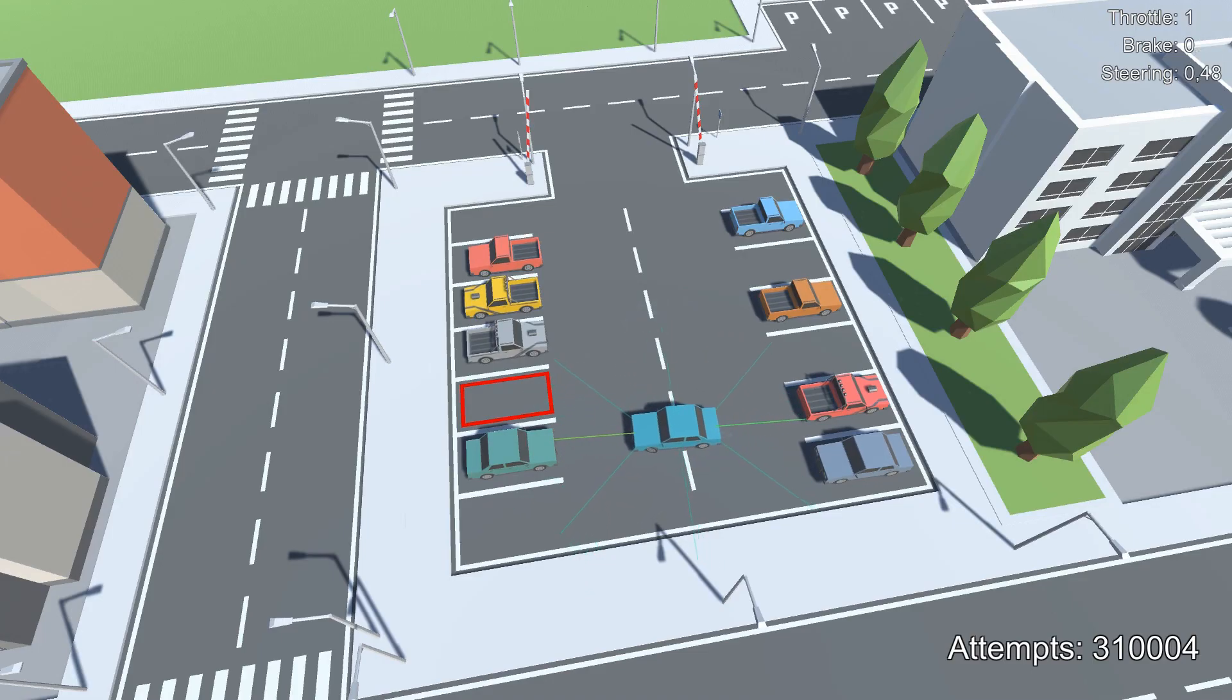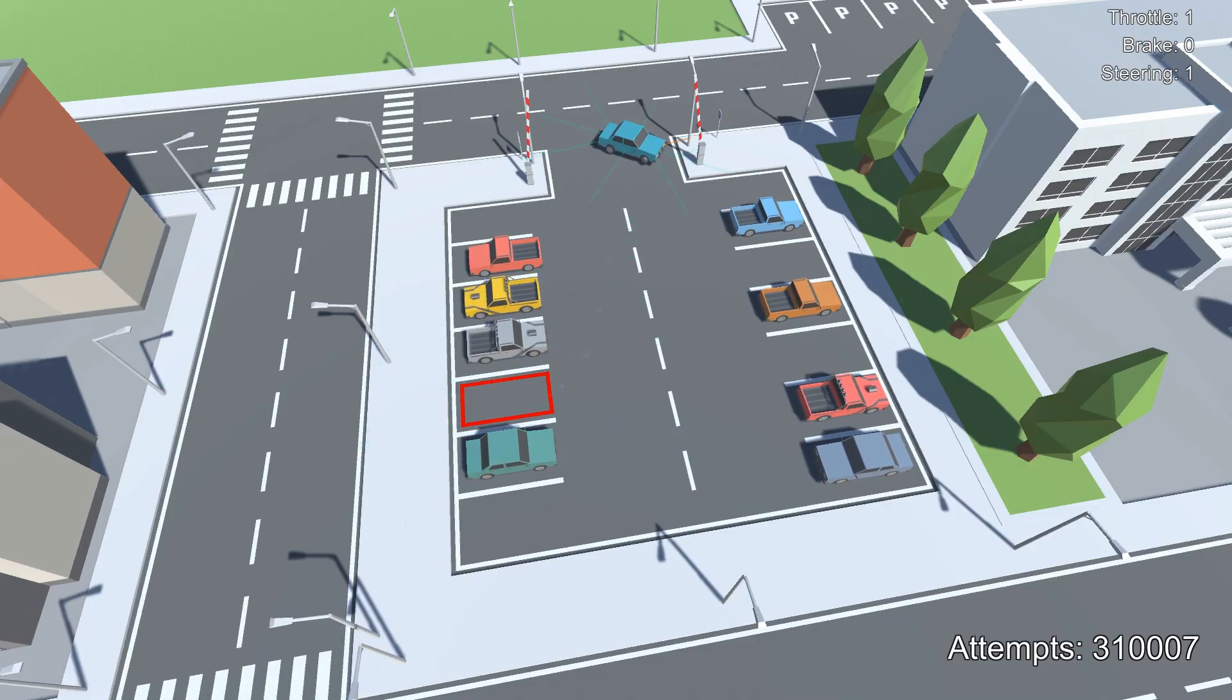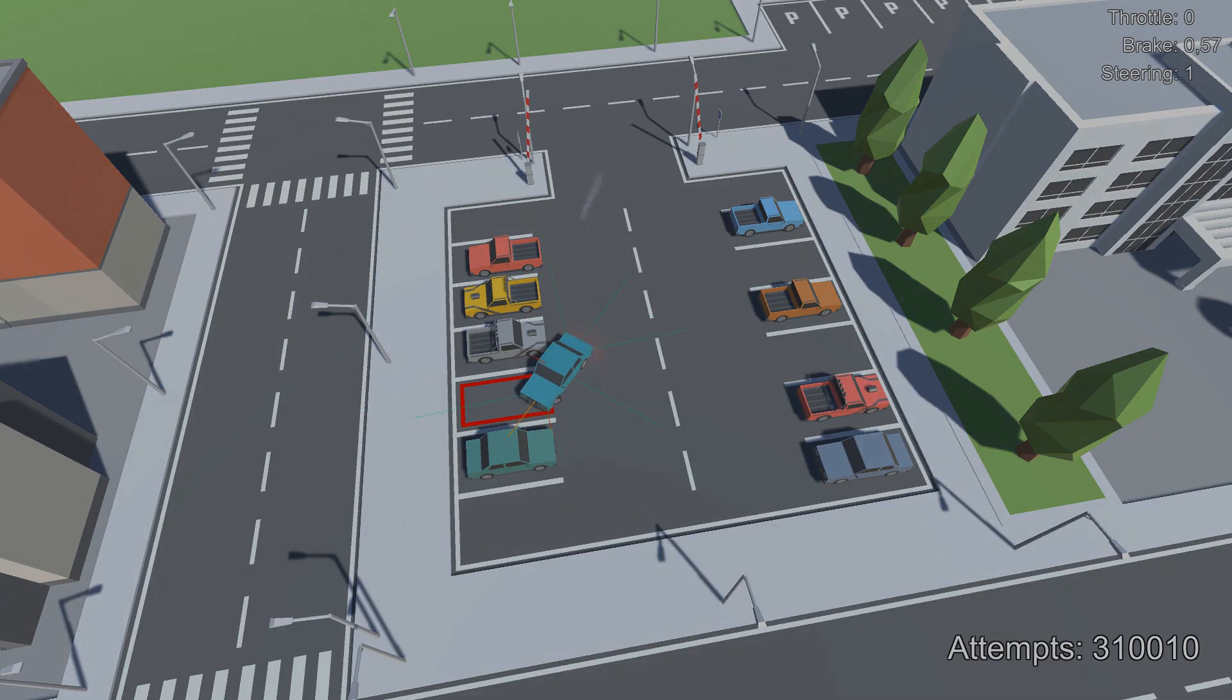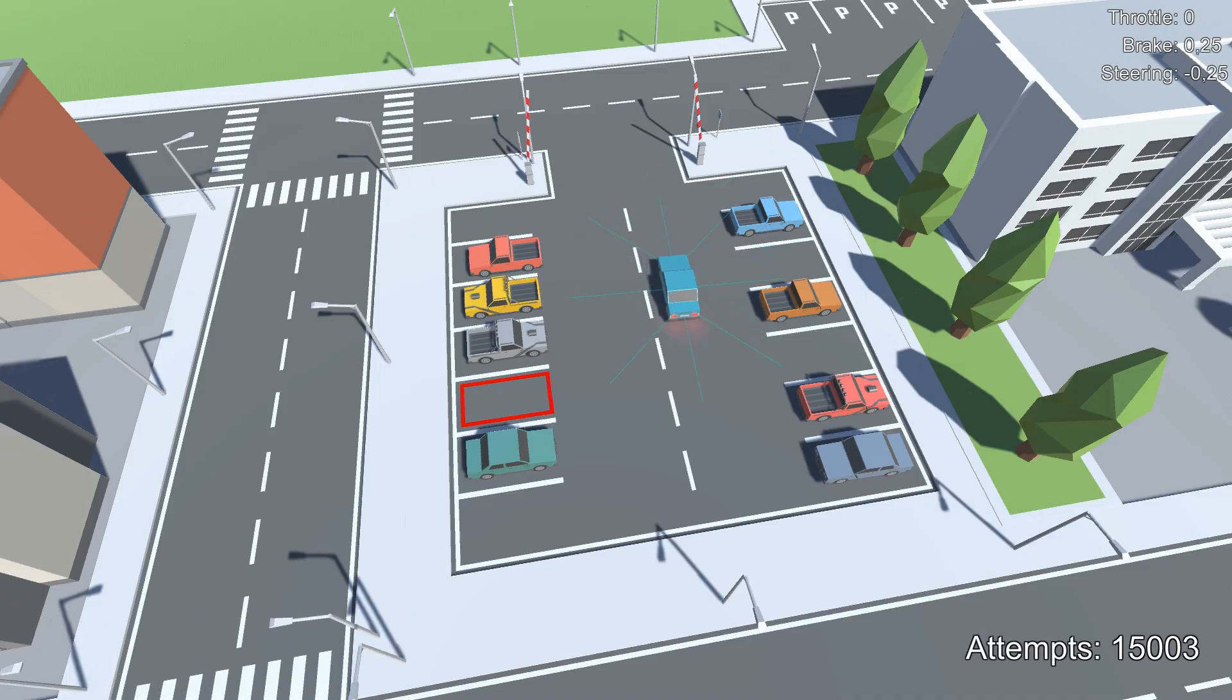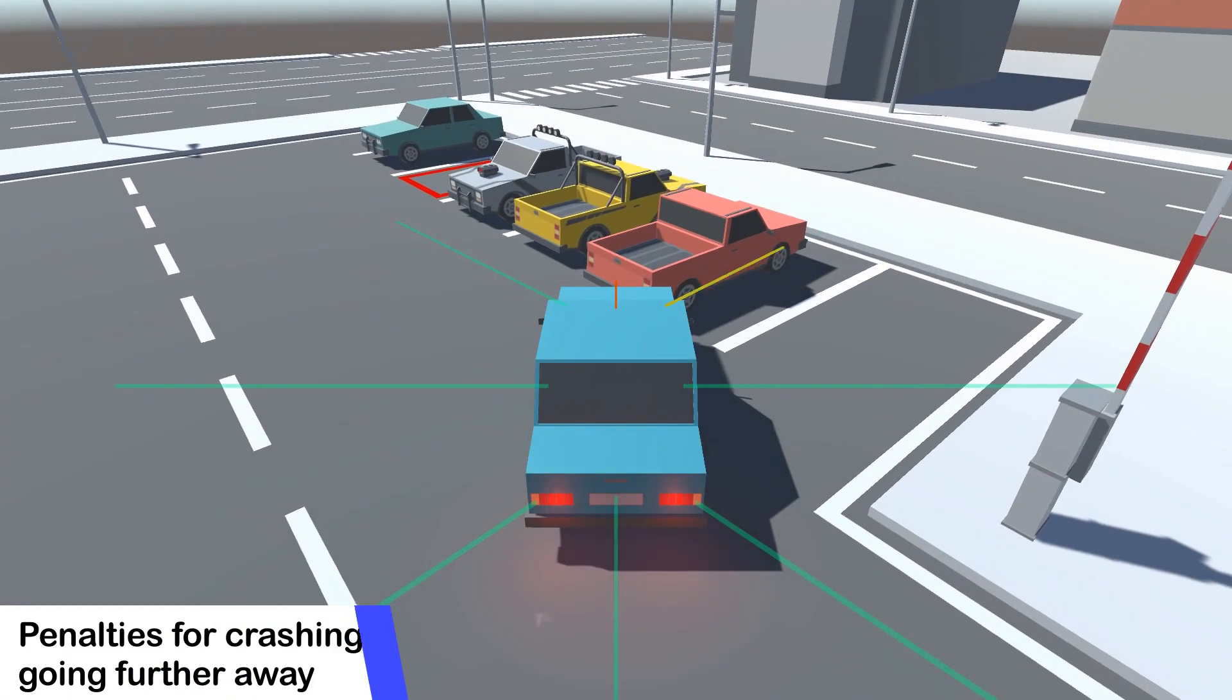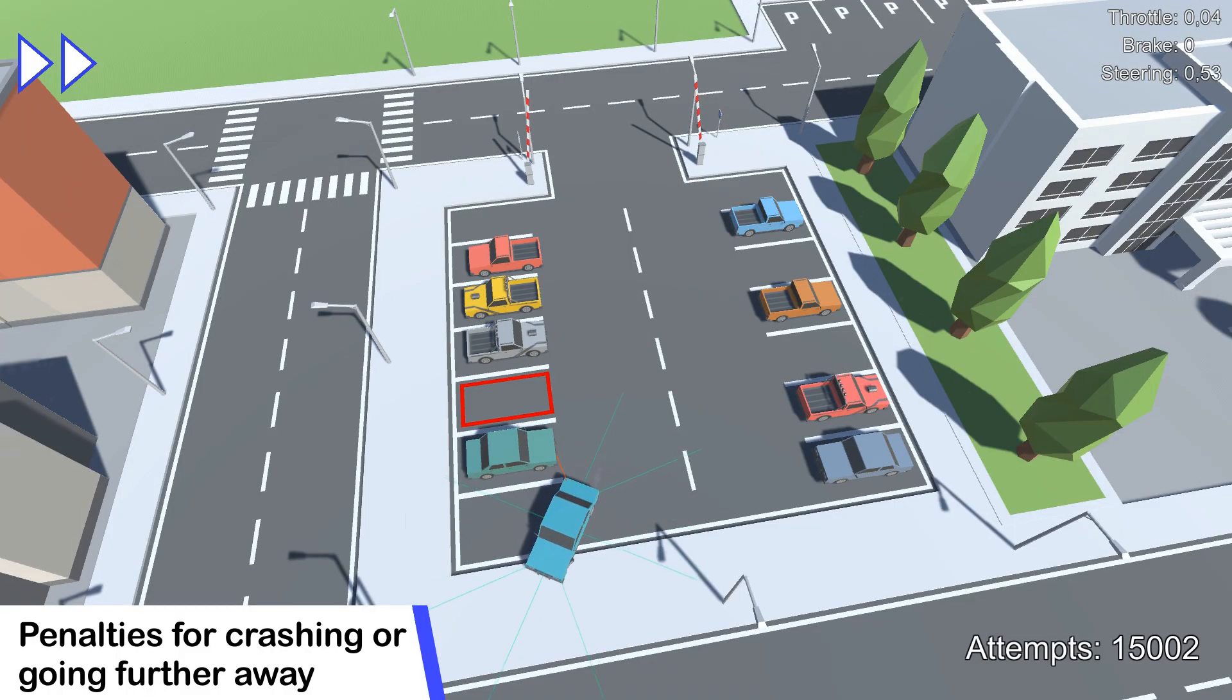We're gonna be using the same framework as last time, which is Unity's ML Agents, and the same learning algorithm, which is reinforcement learning. Basically, the AI is trying different actions in this environment and getting feedback in the form of a reward signal. In our case, there are small positive rewards for getting closer to the parking spot and negative rewards for crashing into things or for going further away from the spot.